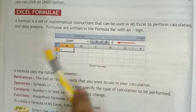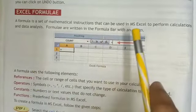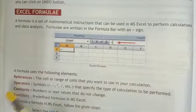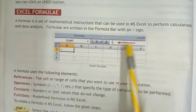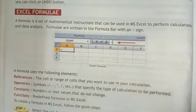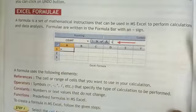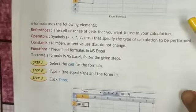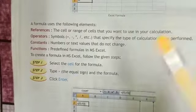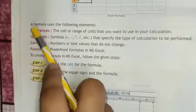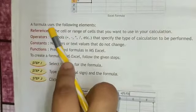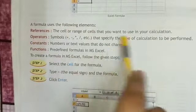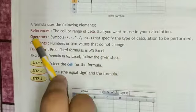When we write a formula in the formula bar of MS Excel, we always have to give the equal sign first. After that, we can write the formula. A formula uses the following elements.